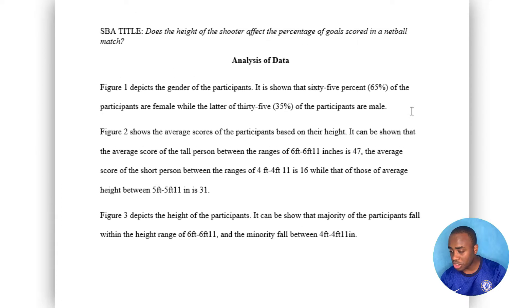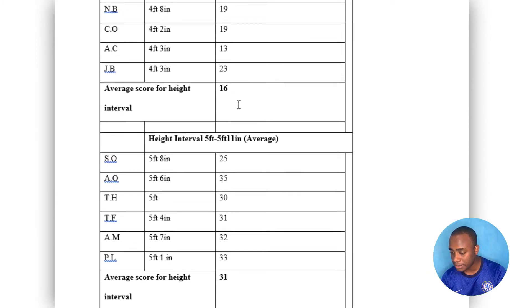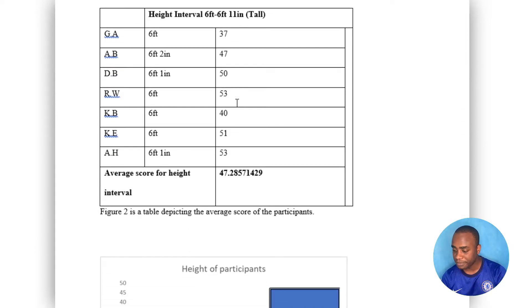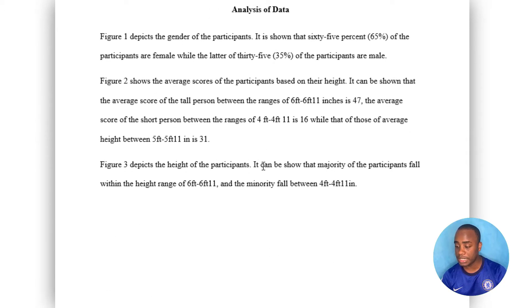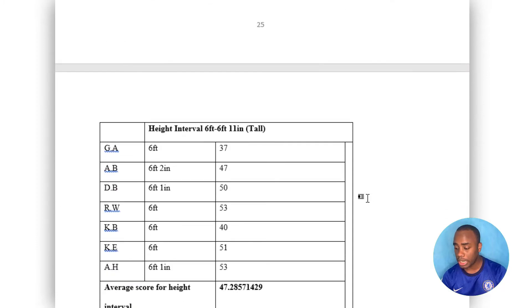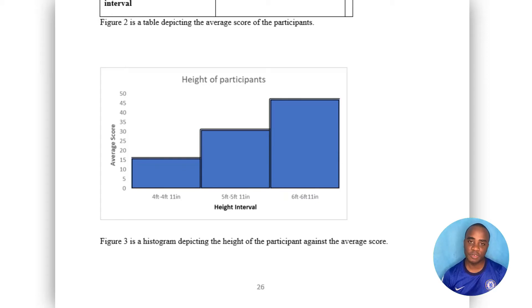Figure 2 shows the average scores of the participants based on their height, and they went on to talk about each of the average scores for the different height intervals. Figure 3 depicts the height of the participants and talks about where the majority and minority of participants fall — and looking at the histogram, that is exactly what I can see. So this analysis is detailed enough: it talks about what we saw, and it is coherent — what they write matches up with what we see. I'd give it the full two marks.